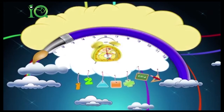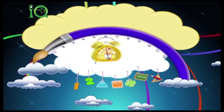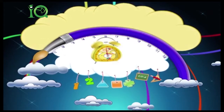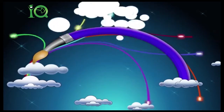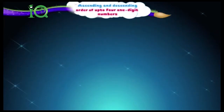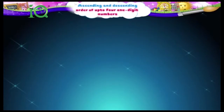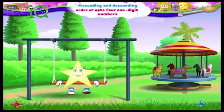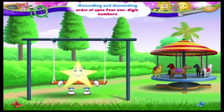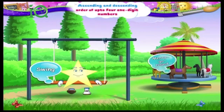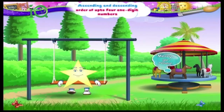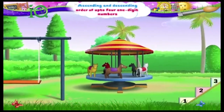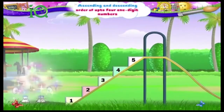Ascending and Descending Order of Up to Four One-Digit Numbers. Starry, here we are at the park. So many things to play on — swings, merry-go-rounds. I'm sure you like this slide the best.